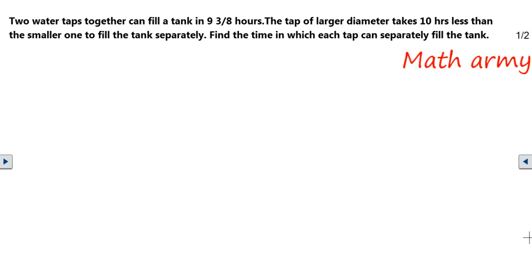Two water taps together can fill a tank in 9 3/8 hours. The tap of larger diameter takes 10 hours less than the smaller one to fill the tank separately. Find the time in which each tap can separately fill the tank.